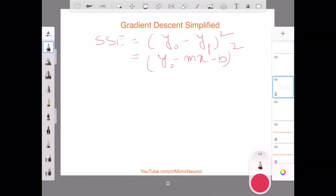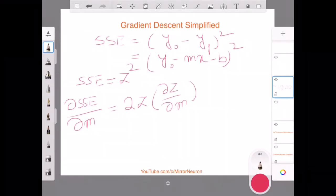So we have already seen such derivatives earlier. Say if I represent SSE equals z squared, then the derivative of SSE with respect to m is 2 times z, and then I take the derivative of z again with respect to m.